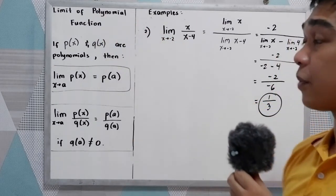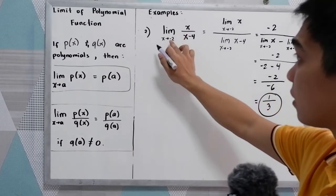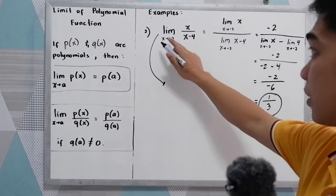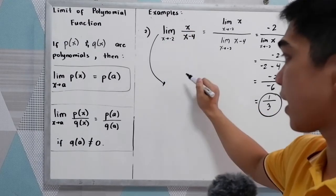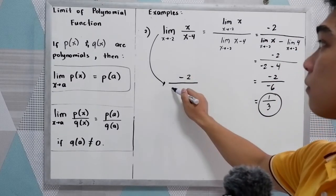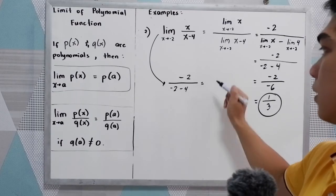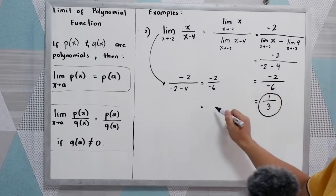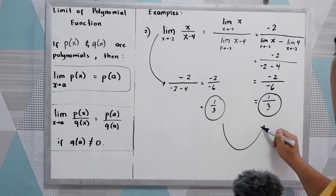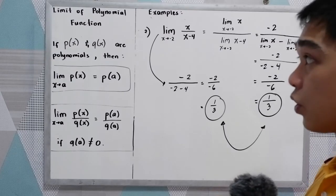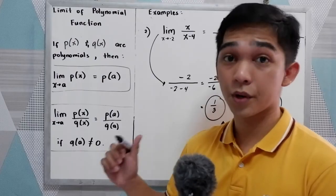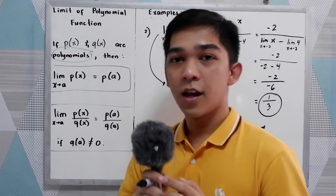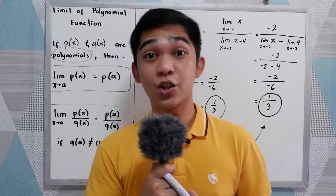Now let us apply the limit of polynomial function to verify. Treating this as a function and substituting A, which is negative 2, in place of X: we get negative 2 over negative 2 minus 4, which equals negative 2 over negative 6, simplified to 1 third. So we get the same answer whether we apply the limit of polynomial function or our theorems. This applies when we have polynomials. Thank you for watching — Senior Pablo Team.